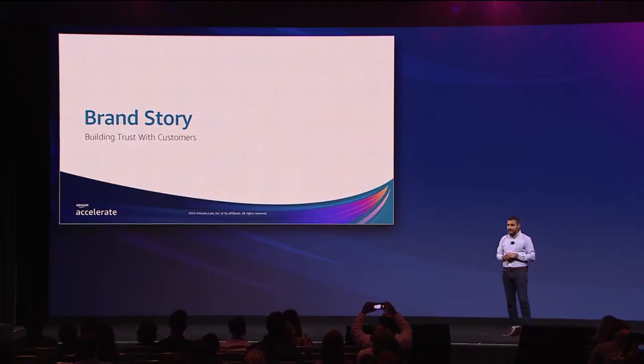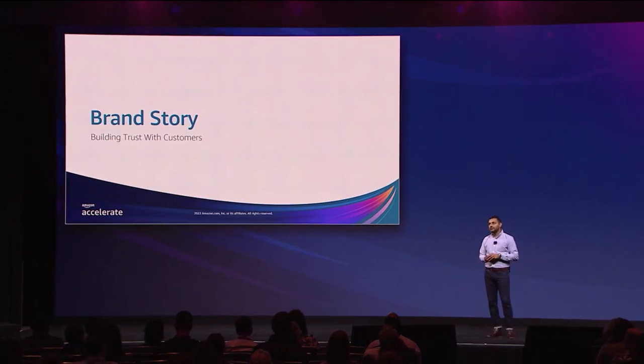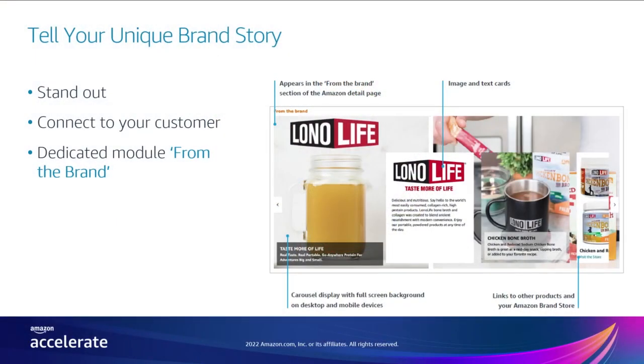Now let's move on to brand story, which is another type of A-plus content. While basic and premium A-plus are designed for sharing detailed product information, brand story A-plus content is for highlighting your brand. Brand story content is shown in a dedicated slot on the product detail page called 'From the Brand,' which is separate from the product description section. Building your brand identity is an important aspect of differentiating yourself in a crowded field. When customers trust your brand, they are more likely to purchase from it and increase conversion. So make sure to use brand story A-plus content to tell your story — tell shoppers who you are, what you do, what motivated you to start your business, what values your brand stands for, and why shoppers should trust you.